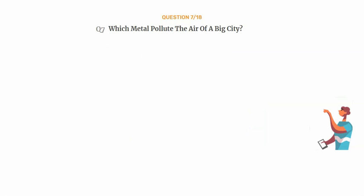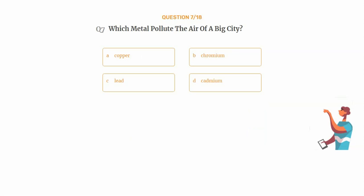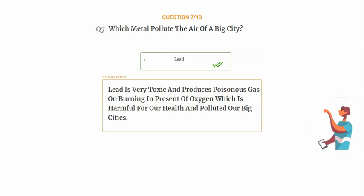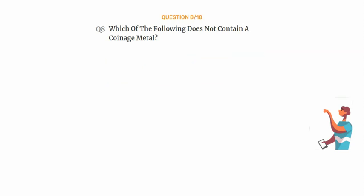Question number seven: which metal pollutes the air of a big city? Option A: copper, option B: chromium, option C: lead, option D: cadmium. The correct answer is option C: lead. Lead is very toxic and produces poisonous gas on burning in the presence of oxygen, which is harmful for our health and pollutes big cities.